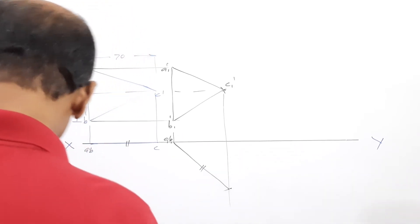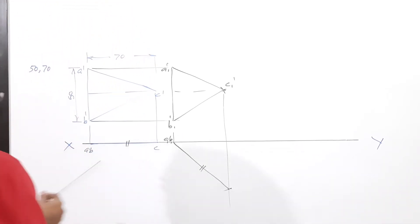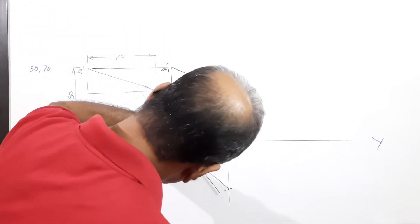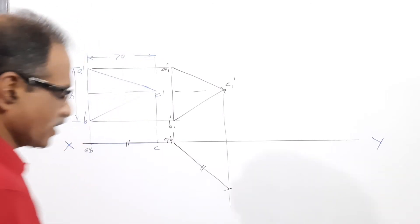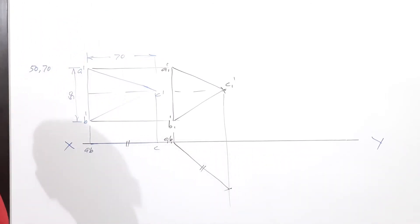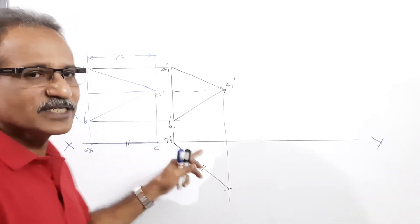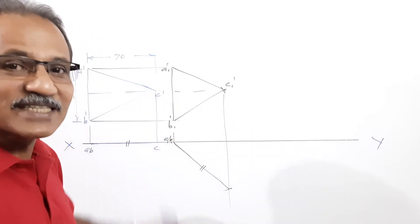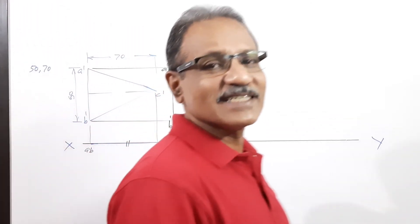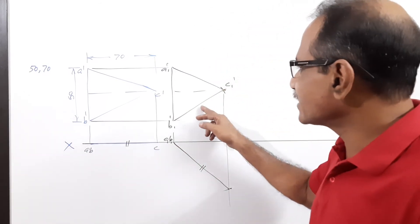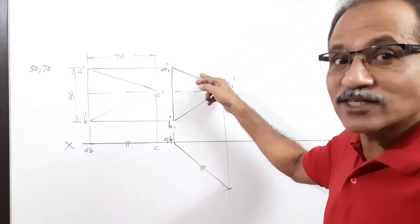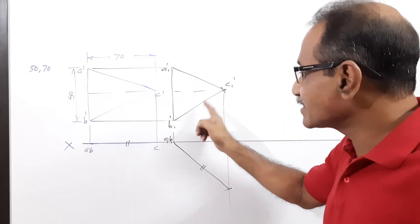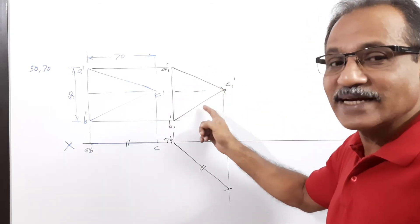Let us verify — the plan lengths are almost the same. This is the plan. The elevation is an equilateral triangle. Now this side corresponds to BC which is a leg of the isosceles triangle, and side AC also corresponds to a leg.